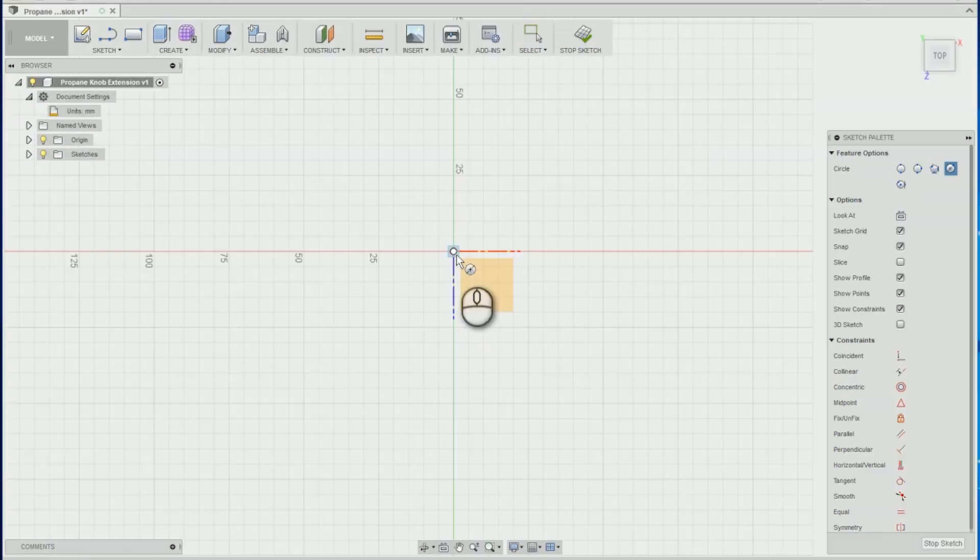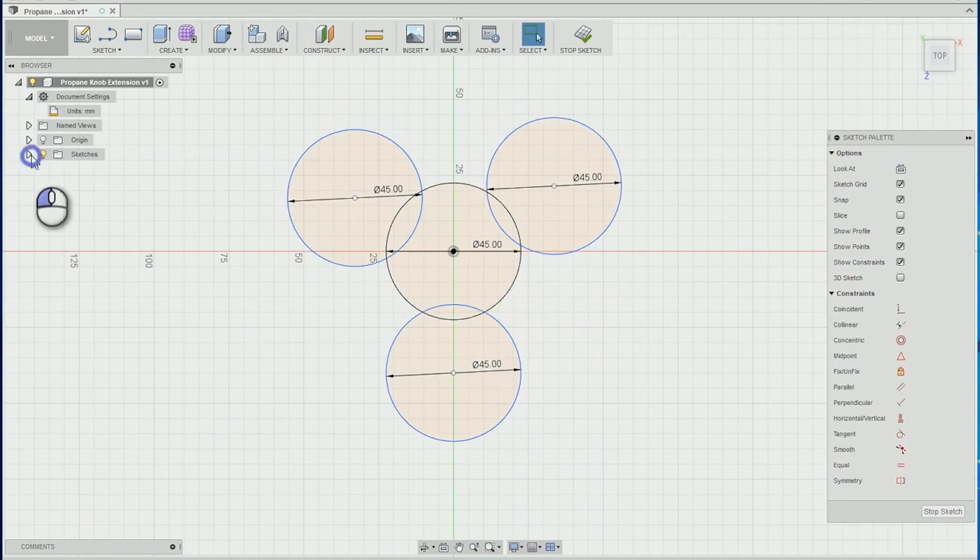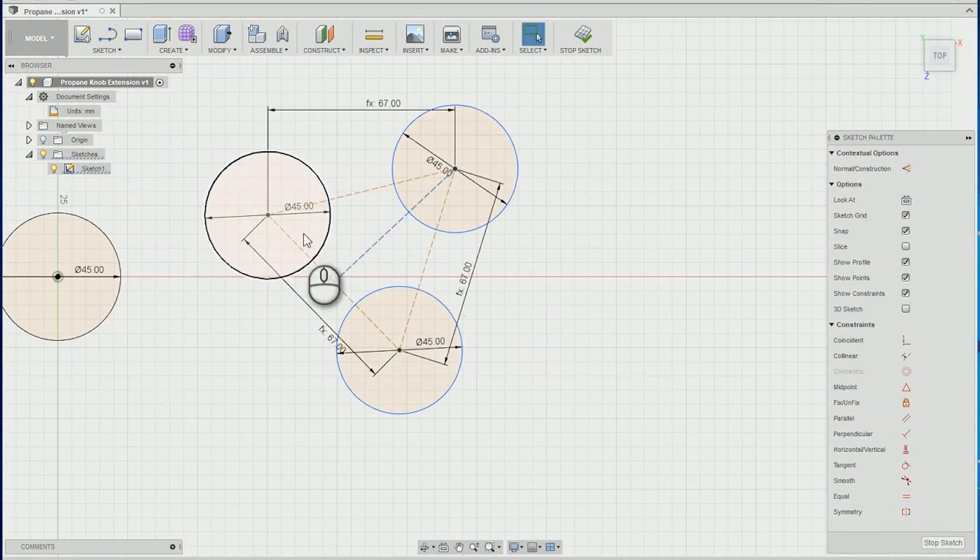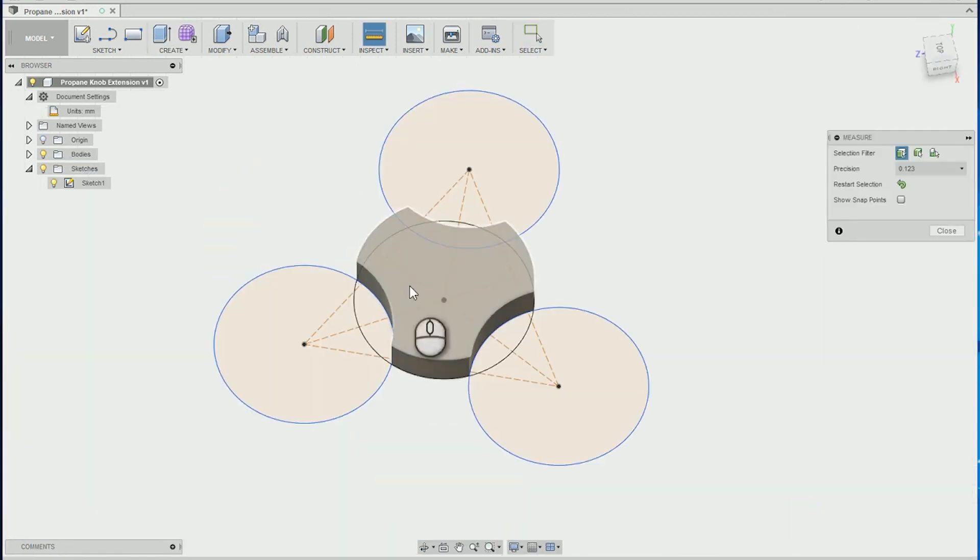To start this project, I went into Fusion 360 to create a 3D model of a propane tank knob using a few measurements I took. Friendly reminder, if you'd like to learn how to make 3D parts like this for your own projects, we have an eight and a half hour video course called Fusion 360 for hobbyists and woodworkers.